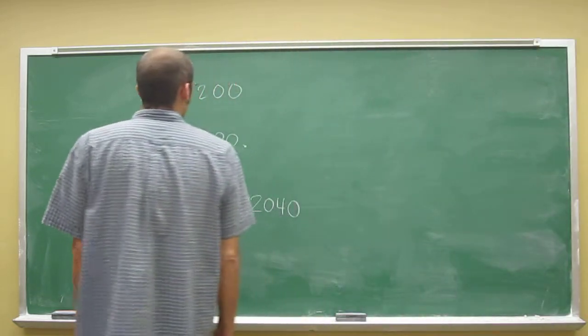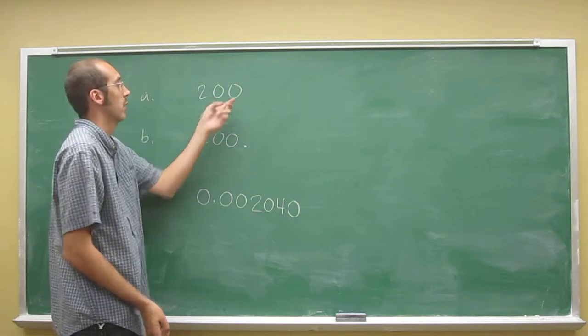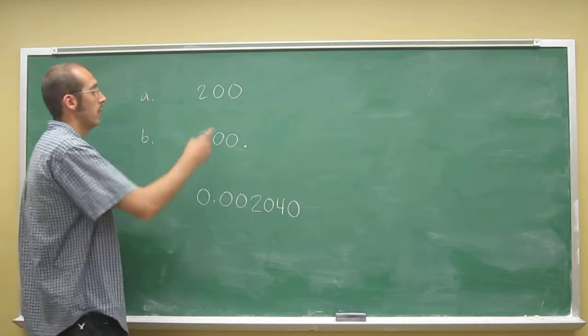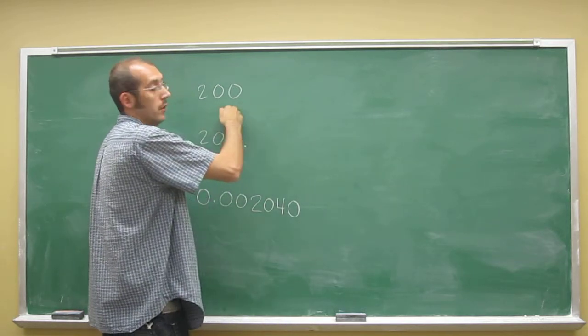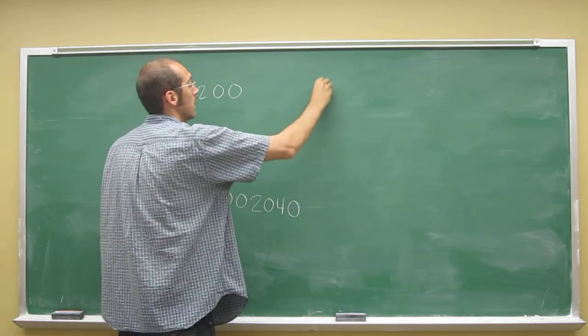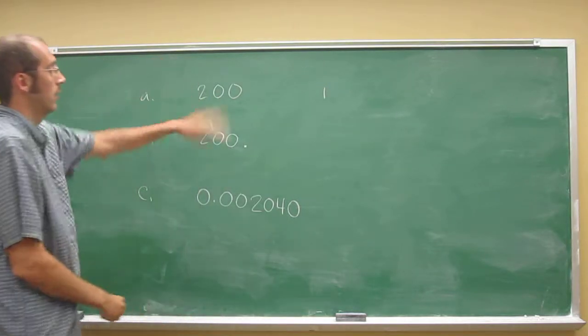Well, of course, like I said in the last problem, the difference between something that has trailing zeros without a decimal point is going to have those zeros as being insignificant. So this is going to only have the one significant digit and the two zeros are insignificant.